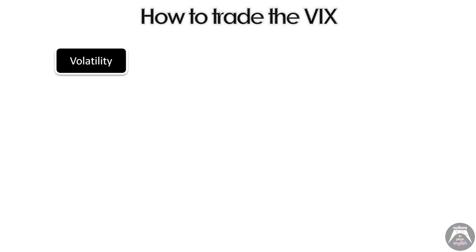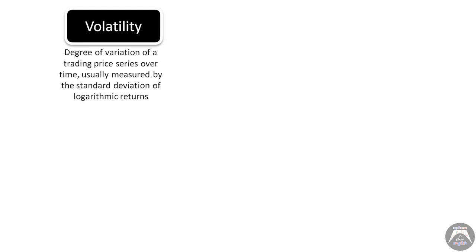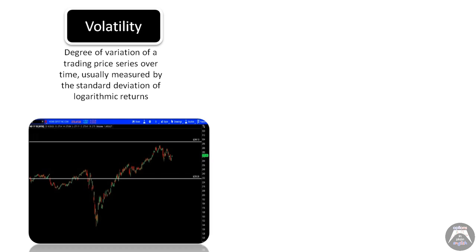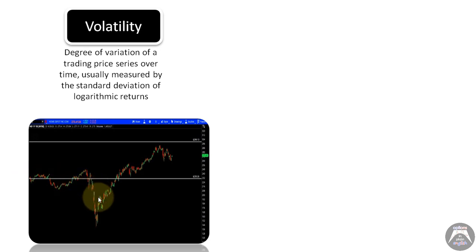First, volatility. What is volatility? Volatility is the degree of variation of a trading price series over time. It's usually measured by the standard deviation of logarithmic returns. So if you have a price chart, you can see volatility in action. If the price is changing a lot and the swings are pretty wide and large, we can say that this instrument has a high level of volatility. If the changes are small and it displays stability over time, the level of volatility is low.